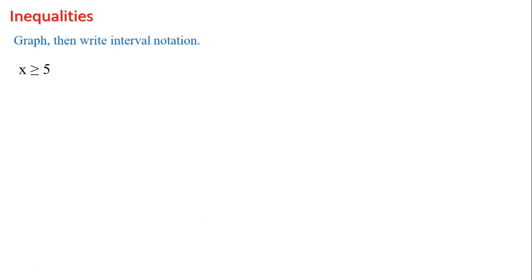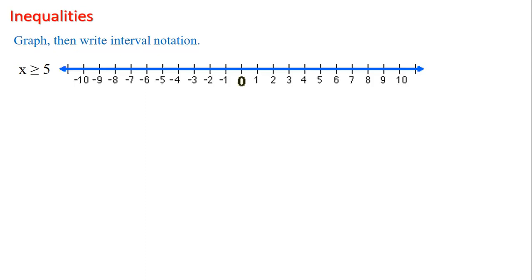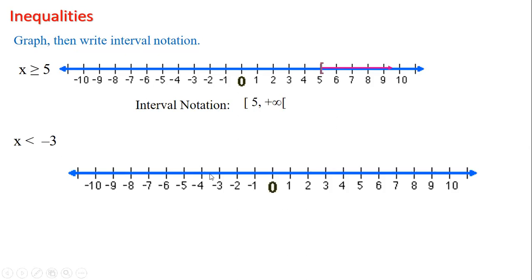Now, inequalities and interval notation. x greater than or equal 5: I draw my axis, and because I have or equal, it will be closed on the five going towards the plus infinity. So I close it on five and open it on the plus infinity. Another example: x is less than negative three — I draw the axis, put an open interval on the negative three, going towards the minus infinity. So my solution will be opened on the minus infinity and opened on the minus three because we do not have or equal. Please practice these two slides on draft, and if you have any questions, contact me directly.